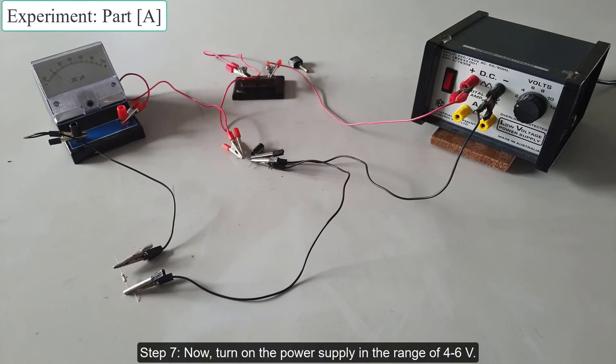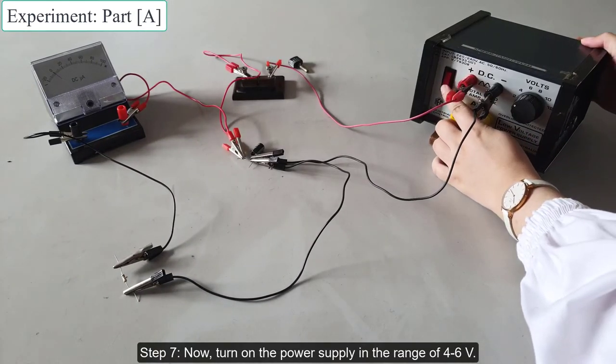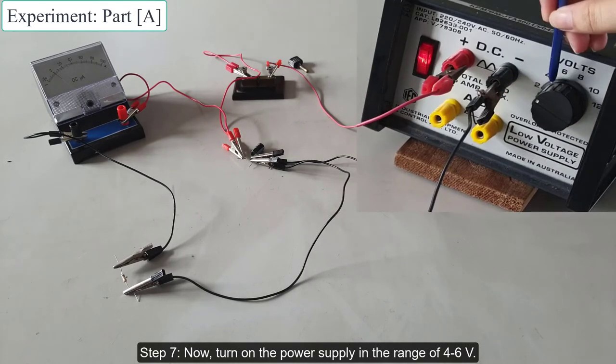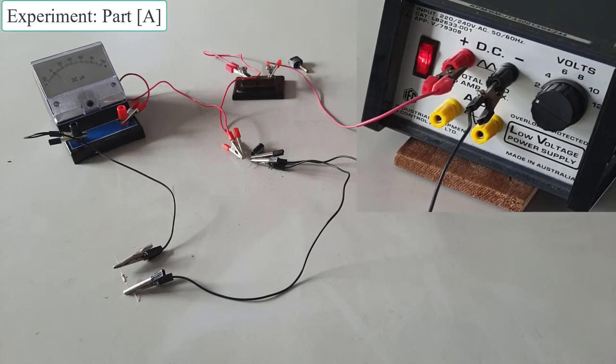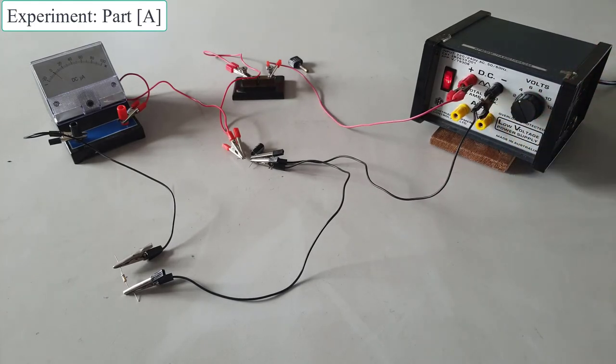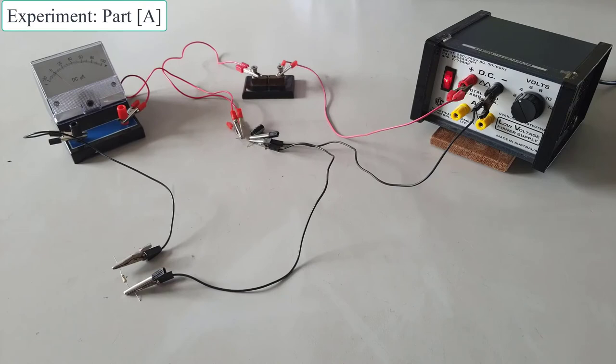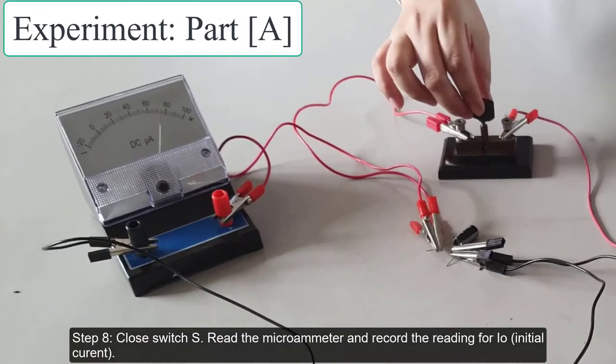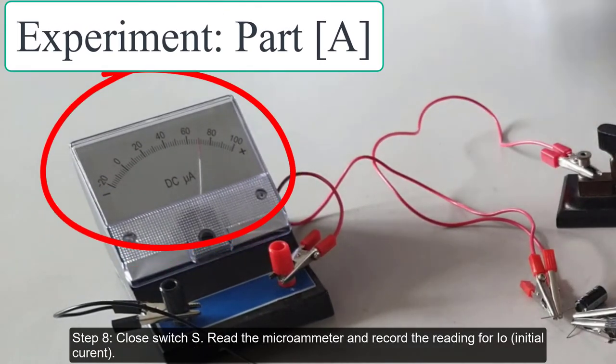Now, turn on the power supply in the range of 4 to 6 volts. Close switch S. Read the microammeter and record the reading for I not.